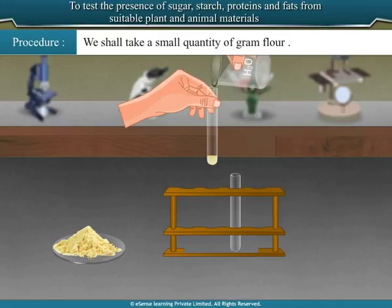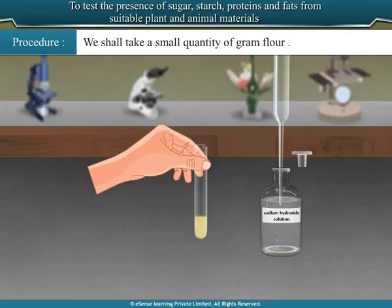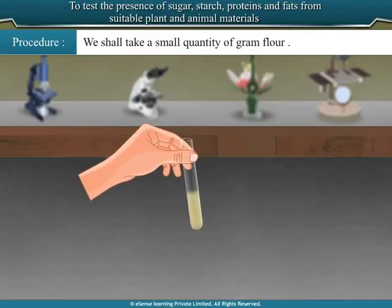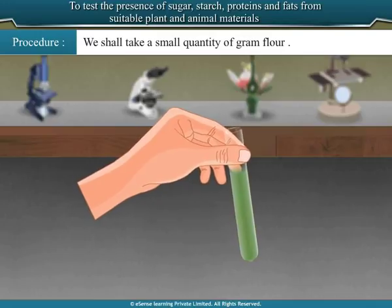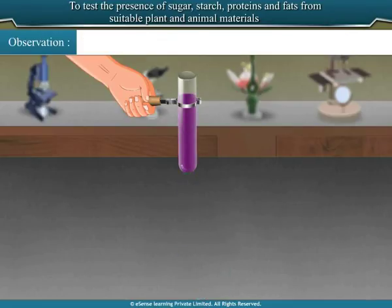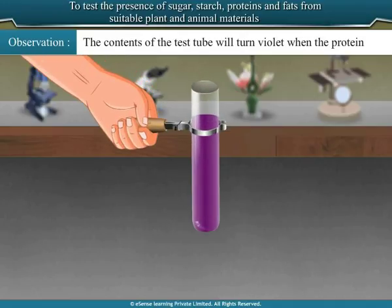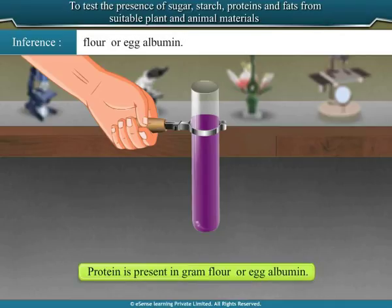Add 2 ml of water to the contents in the test tube and shake it well. Now add 2 ml of sodium hydroxide solution and mix well. Then add a few drops of copper sulfate solution to the same test tube. Boil the contents for some time and then cool it. Observation: The contents of the test tube will turn violet when protein is present. Inference: The positive test confirms the presence of protein in gram flour or egg albumin.